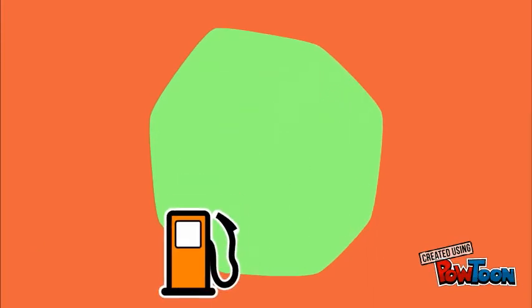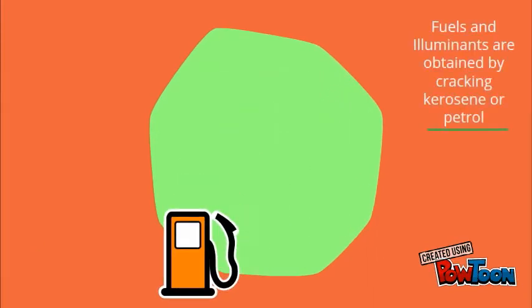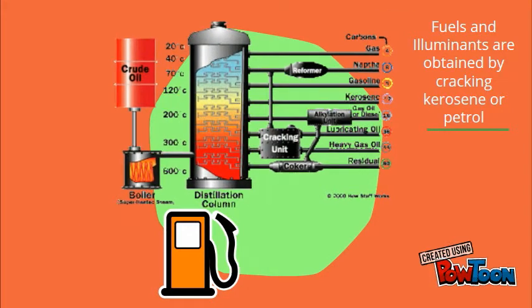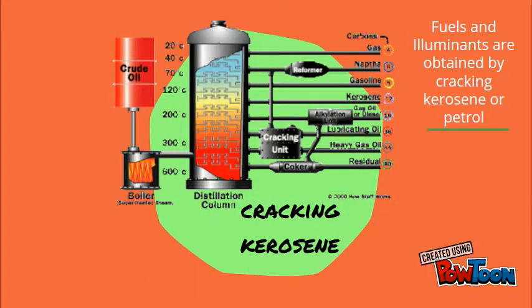Fuels and illuminants can also be derived from lower alkenes. These are obtained by cracking kerosene or petrol.